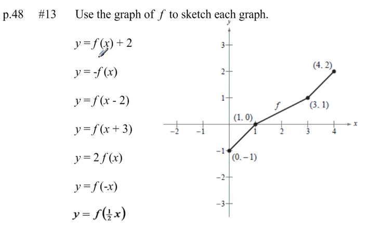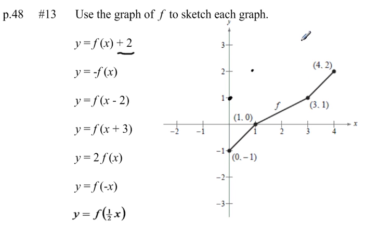Let's take a look at this first one: y equals f of x plus 2. This plus 2 at the end is going to shift our graph two units up. Anytime a number is added or subtracted at the end of a function, it gives us a vertical shift. So I can take every point on the original function and move it two units up, plot those points, connect them, and our new sketch looks the same as the original.